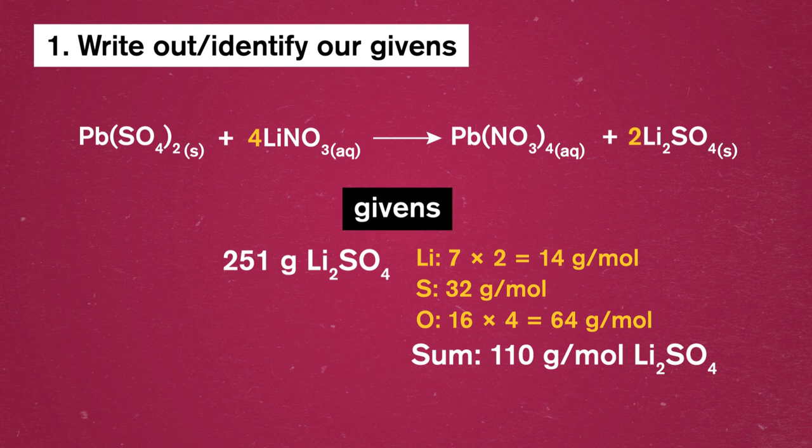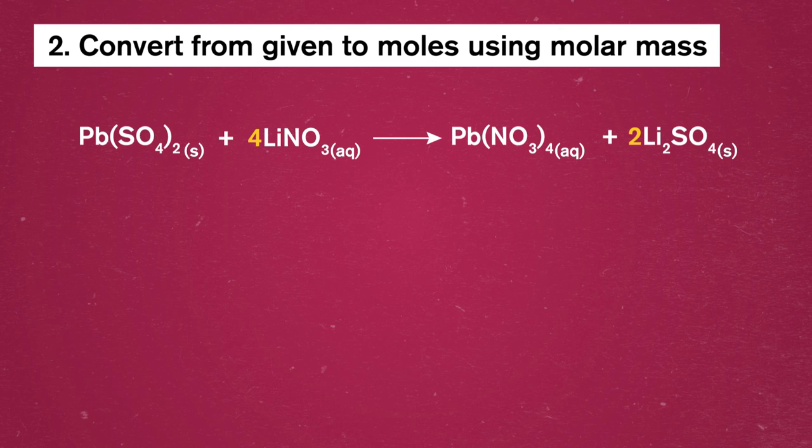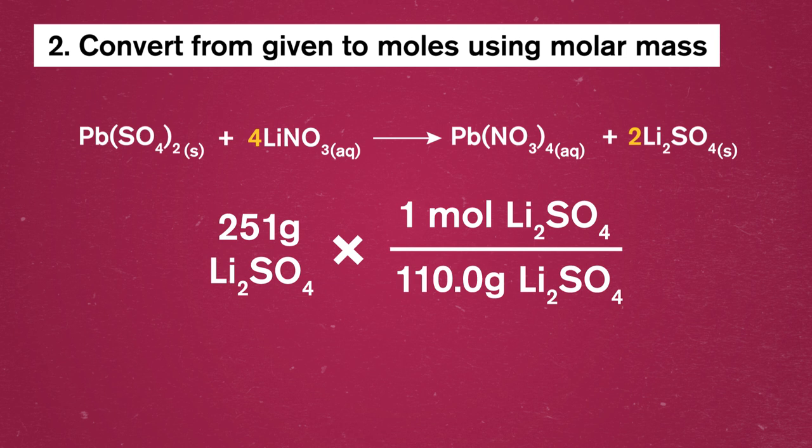Second, we need to take our grams of lithium sulfate and convert them to moles using the compound's molar mass. Just like we've done with mole and mass problems in previous episodes. So we'd write out 251 grams of lithium sulfate times the molar mass of lithium sulfate. We need to flip the fraction so that we've got the moles on top, since that's the units we need to convert to. Our grams will cancel out when we multiply our terms.